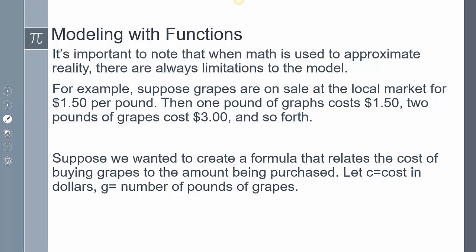So an example that I have here is let's say grapes go on sale at the local market for $1.50 per pound. One pound of grapes costs $1.50, two is going to cost $3 and so forth. But now if we wanted to create a formula that's going to relate the cost of buying grapes to the amount being purchased, we'll say C is going to be cost in dollars and G is going to be the number of pounds of grapes. So the cost is going to be $1.50 times the number of pounds of grapes that I get.